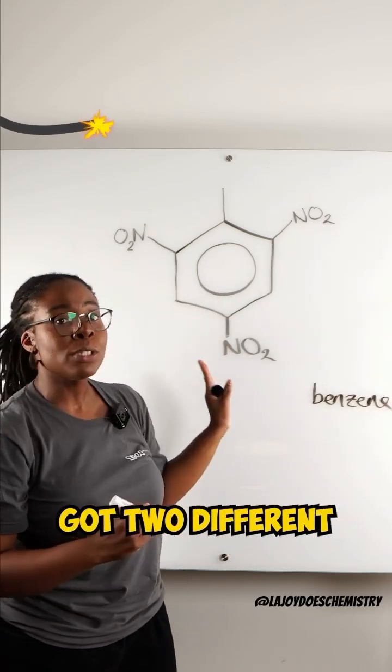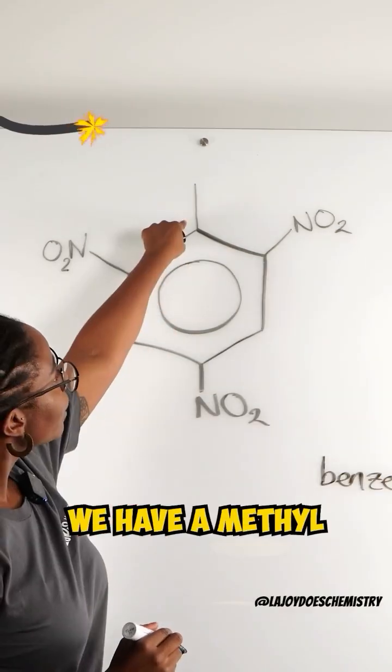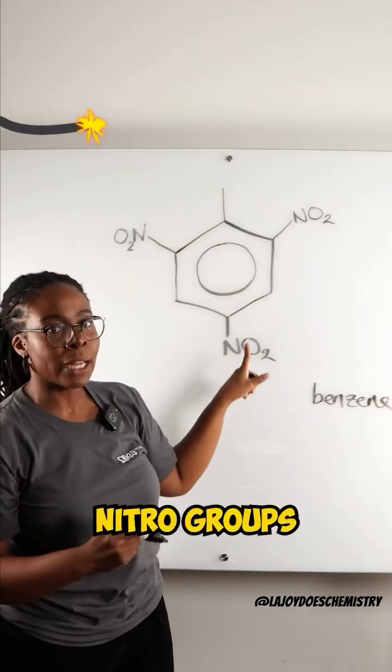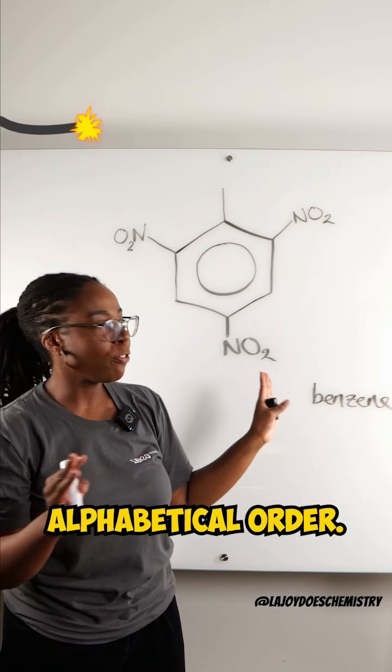We've then got two different groups on it. We have a methyl group and we have three nitro groups. Those need to go in alphabetical order.